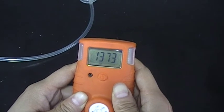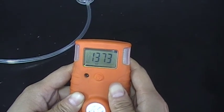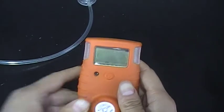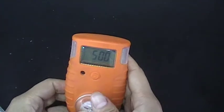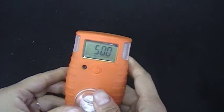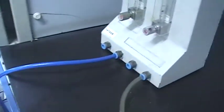After the zero calibration is finished, it will enter the span calibration. You need to connect the calibration cap with the device and adjust the flow meter to 19 to 100 milliliters per minute.